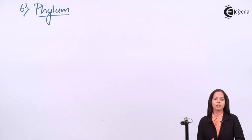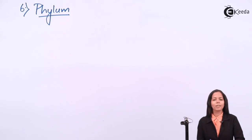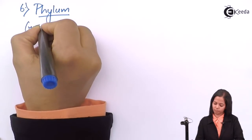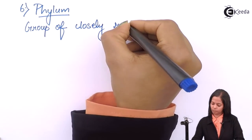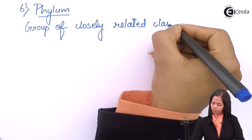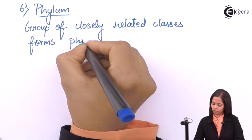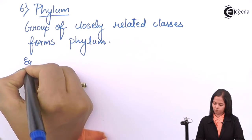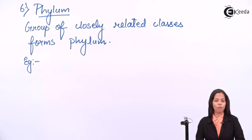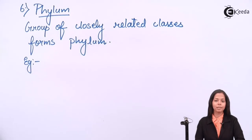The next category above class is phylum. Phylum is a group of closely related classes. An example of phylum is Chordata. Chordata includes the classes Mammalia, Aves, Reptilia, Pisces, etc.